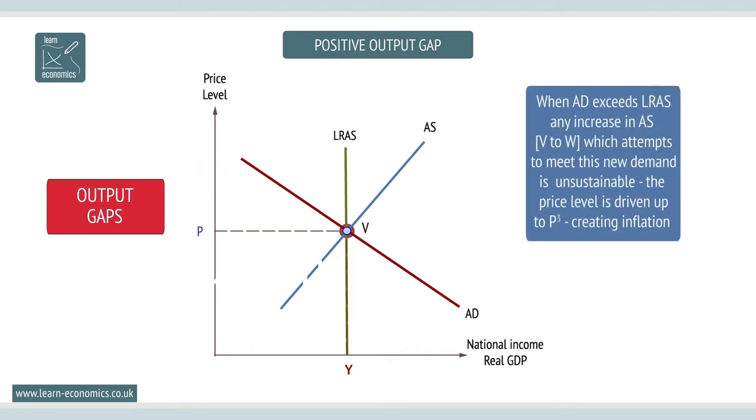When aggregate demand exceeds long-run aggregate supply or LRAS, any increase in AS such as V to W which attempts to meet demand is likely to be unsustainable. The price level is driven up to P3, creating inflation.